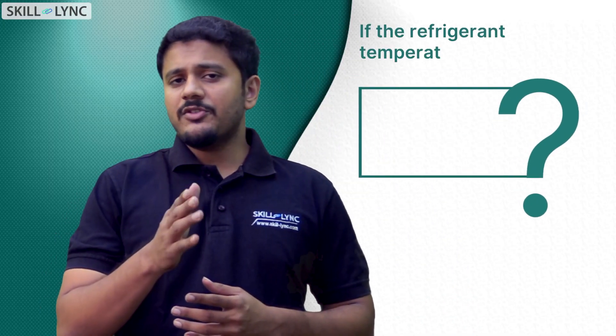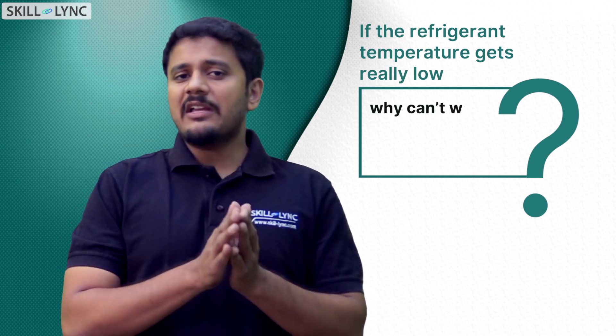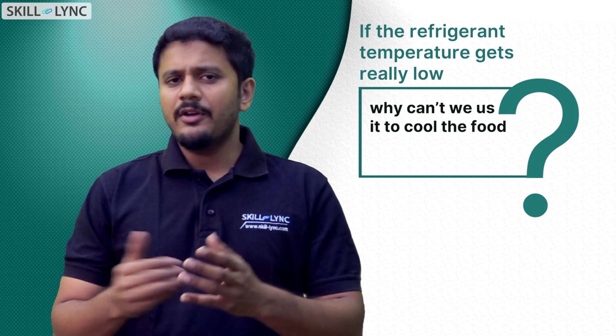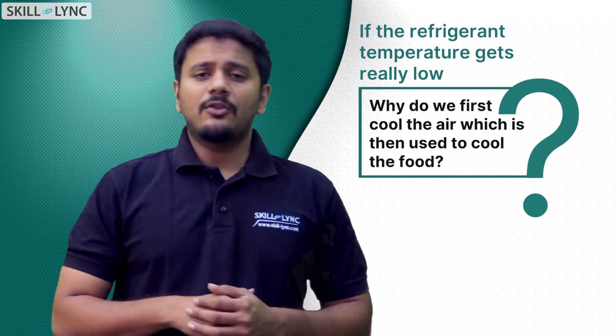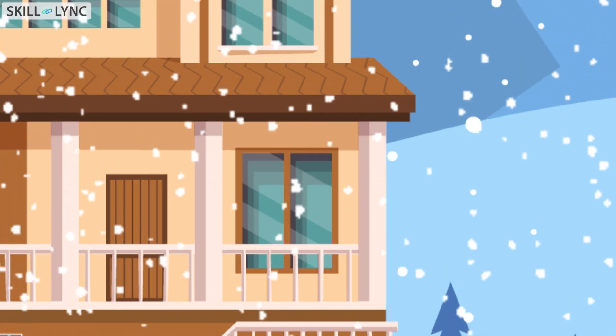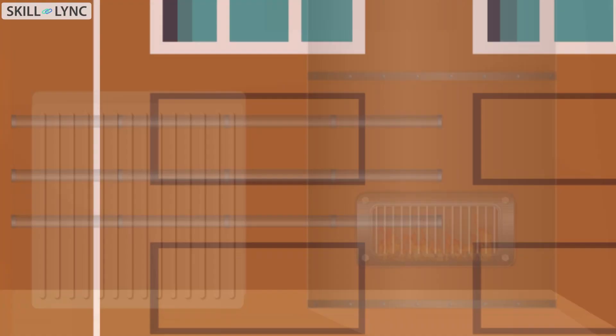We might ask: if the refrigerant temperature gets really low, why can't we use it to cool the food directly? Why do we first have to cool the air, which is then used to cool the food? The answer is simple — you don't want to expose your food to a dangerous chemical like R134a. That is why R134a is used to cool the air first, and then your food is cooled by the chilled air.